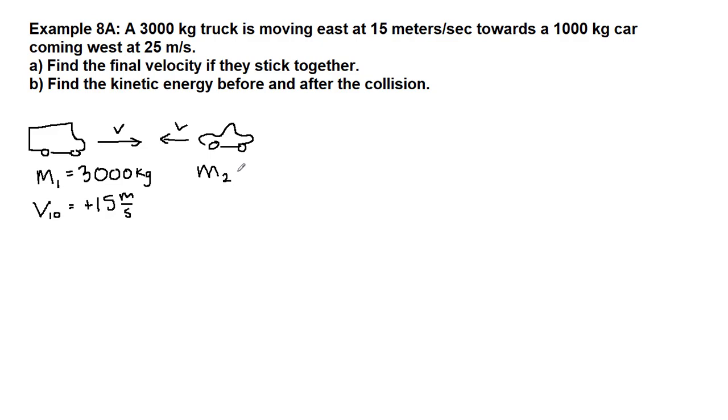We have a car that is moving west, so if we call that the second object m2, that would be 1,000 kilograms. The second object's velocity at the start of the problem v2 initial is negative because it's pointing west, 25 meters per second.